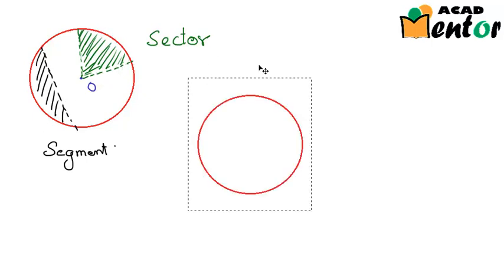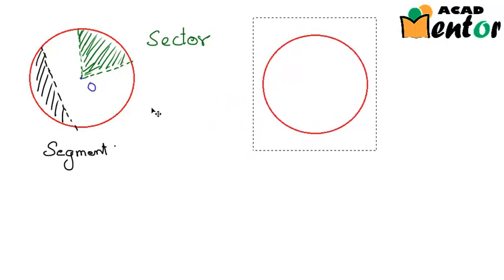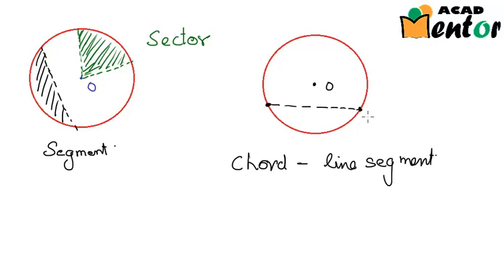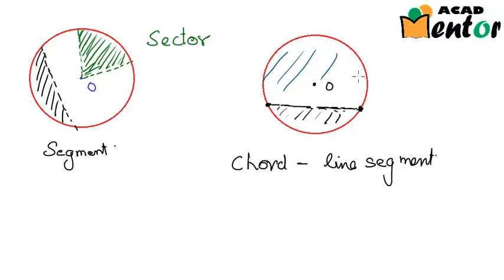Now let us see what is a chord. If this is our circle with center at point O, a chord is a line segment with end points on the circle. These end points lie on the circle and this forms a chord. When you look at a chord, you see that it cuts the circle into two different segments — one is the minor segment, this one, and one is the major segment, the bigger one.